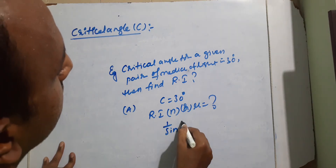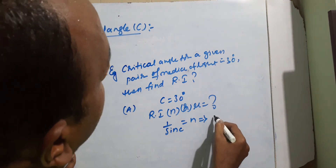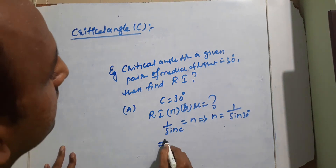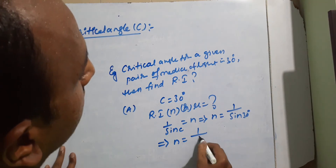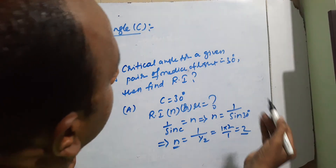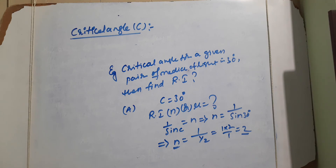Using the formula 1/sin c = n, we get n = 1/sin 30°. Since sin 30° = 1/2, we have n = 1 ÷ (1/2) = 2. So the refractive index of the denser medium in the given pair of media is 2. Likewise, given the critical angle we can calculate the refractive index, and given the refractive index we can find the critical angle.